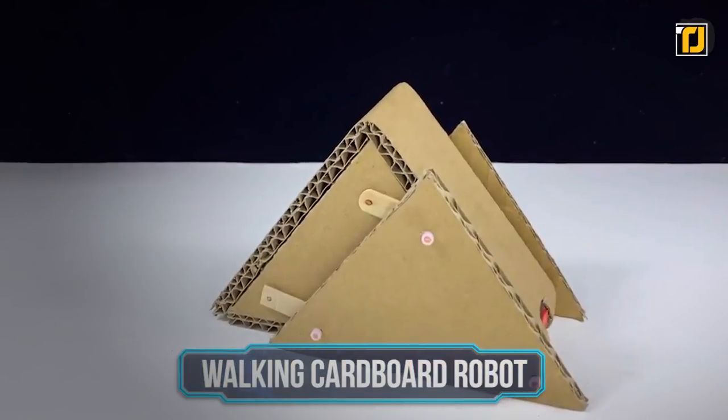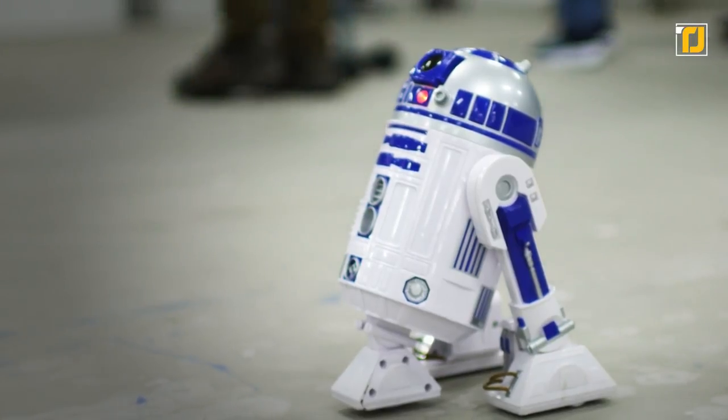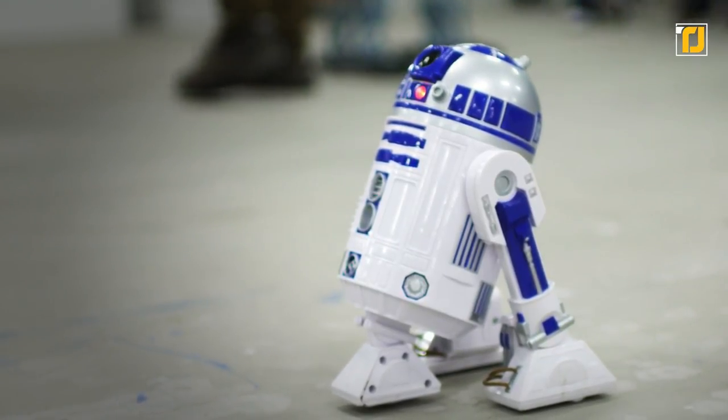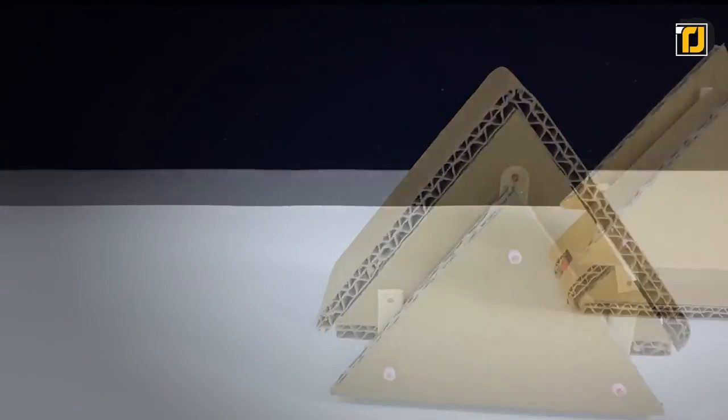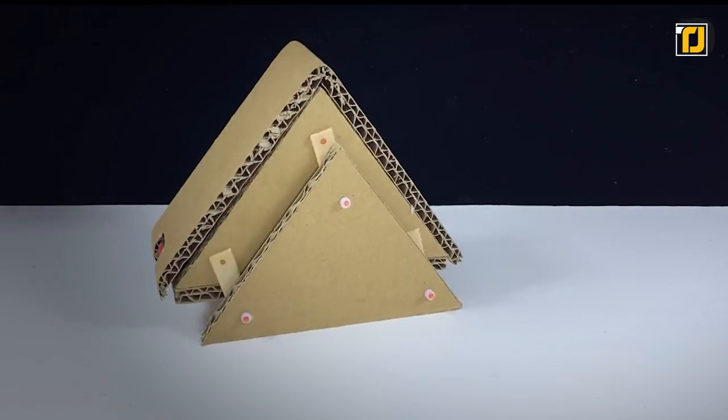Number 12. Walking Cardboard Robot. Move over R2D2, there's a new cutest robot in town. Just look at this little guy move with all that gusto. It's the perfect handmade present for any inquisitive child.